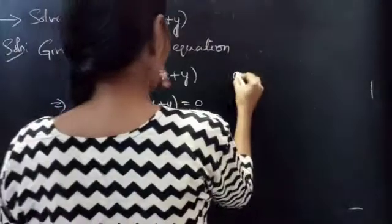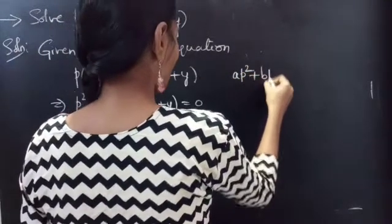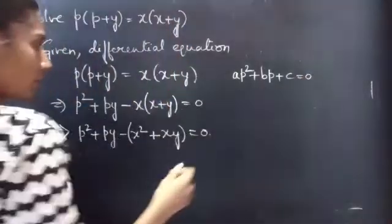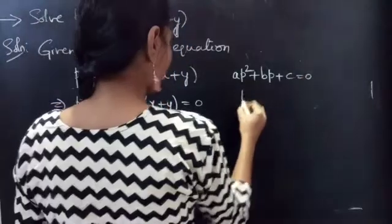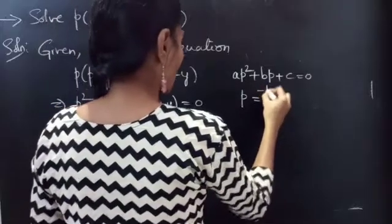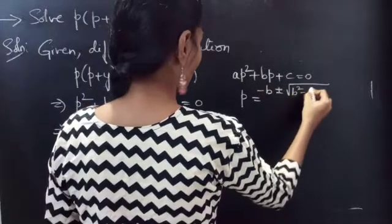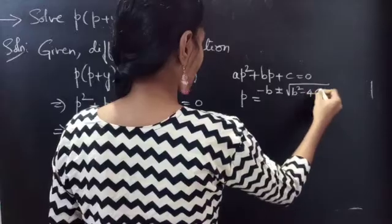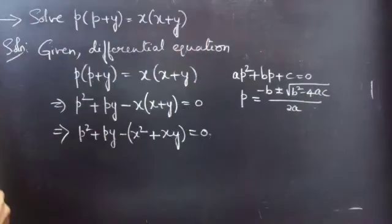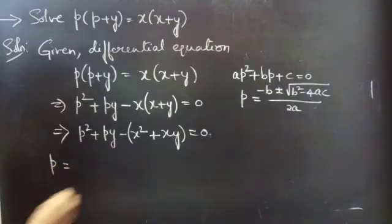So let's consider a quadratic equation in P: AP² + BP + C = 0. Then P equals (−B ± √(B² − 4AC)) / 2A is the quadratic formula. Now we will use the quadratic formula.